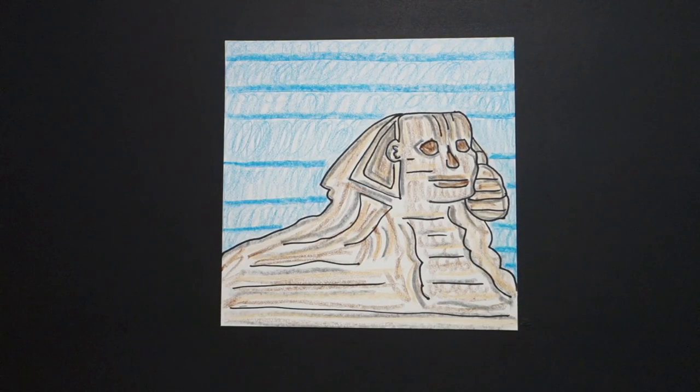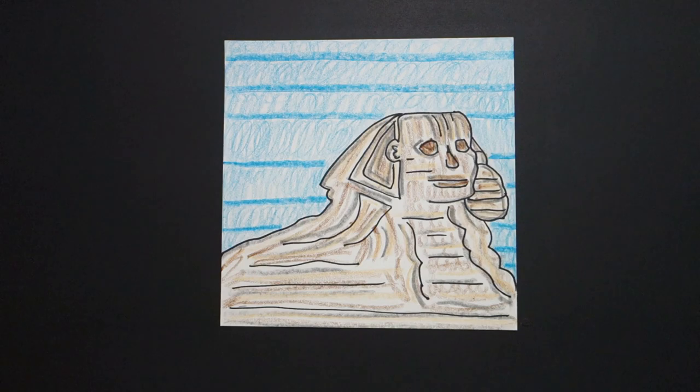Here is my Great Sphinx of Giza. He's got a head of a human with the body of a lion. It's the oldest monumental sculpture in Egypt. Supposedly it was built to guard the temples. Okay. Bye-bye.